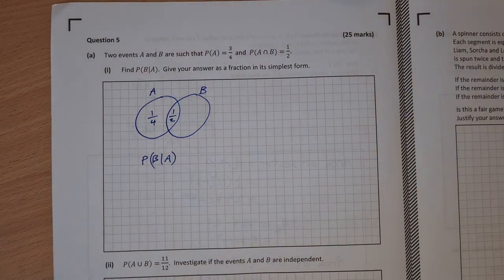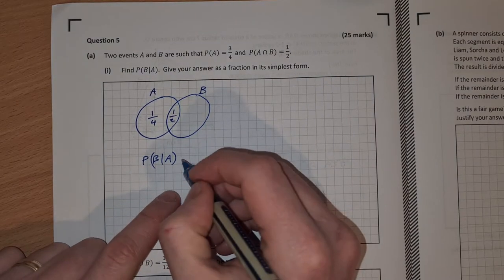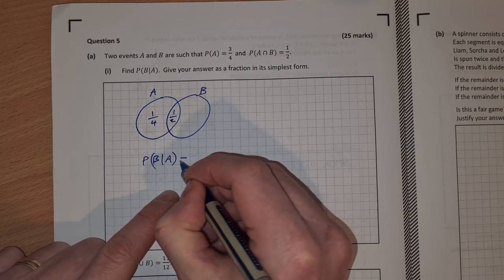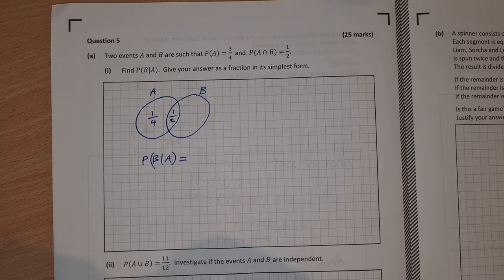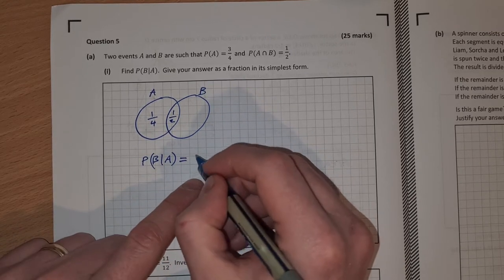The probability that B happens out of all of this is 2 quarters of 3 quarters. So 2 quarters out of the 3 quarters. So the probability of B given A is 2 quarters out of the 3 quarters which is actually 2 out of 3 which is 2 thirds.